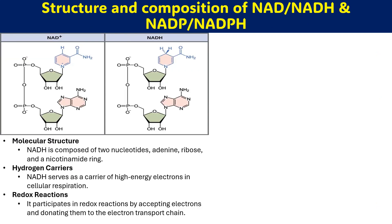Looking at the structure, NADH is composed of two nucleotides: an adenine, a ribose sugar, and a nicotinamide ring. There are two ribose sugars — one in NAD+ and one in NADH. The reduction occurs at the nicotinamide ring. These two nucleotides are joined through a diphosphate linkage — two phosphate molecules.